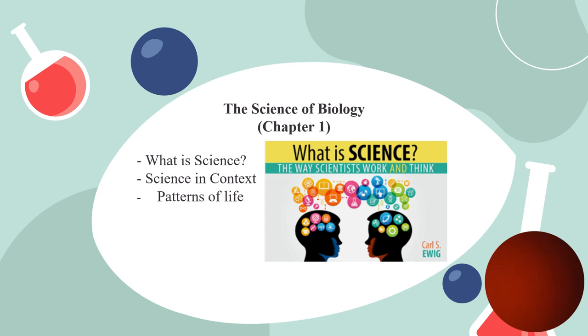At the end of this chapter, we will finish with lesson three, which is patterns of life. Living things are made up of basic units called cells, are based on universal genetic codes, and they obtain and use materials and energy. They grow, reproduce, and respond to their environment.